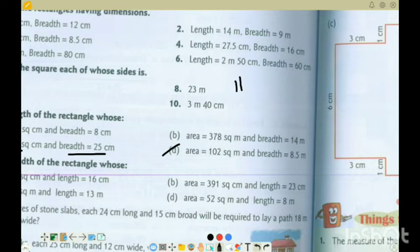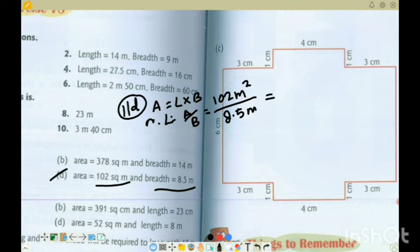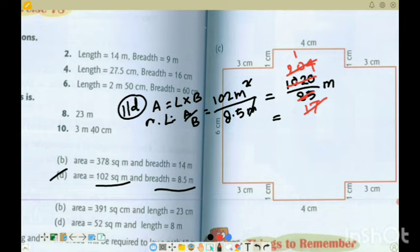11d: area is equal to length into breadth, and length is equal to area by breadth. Area is 102 meter square and breadth is 8.5 meter. So 8.5 from denominator, multiply by 10, I will get 1020 by 85 meter. Now we will solve it. Divisible by 5: 5 times 1 is 5 and 35, so 5 times 7 is 35. 5 times 2 is 10. Divide by 2 to get 204 by 17. 17 times 1 is 17, remainder 3, 34, 17 times 2 is 34. So the final answer will be equal to 12 meter, which is the length.